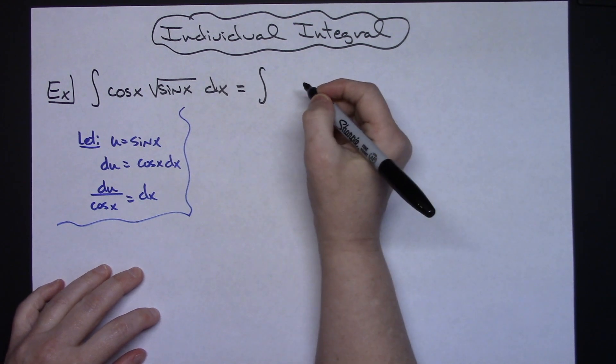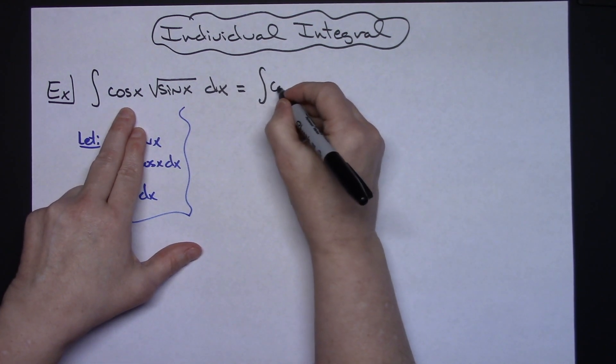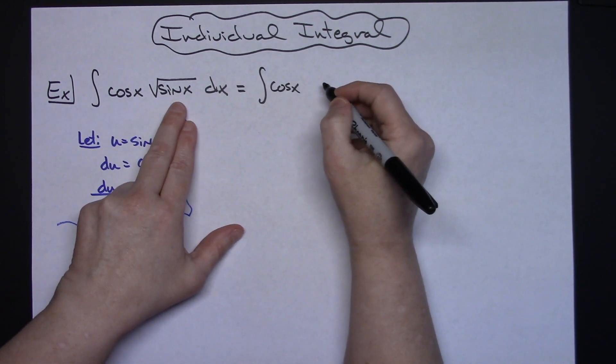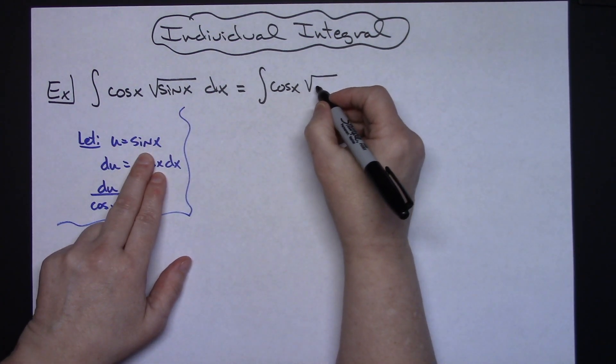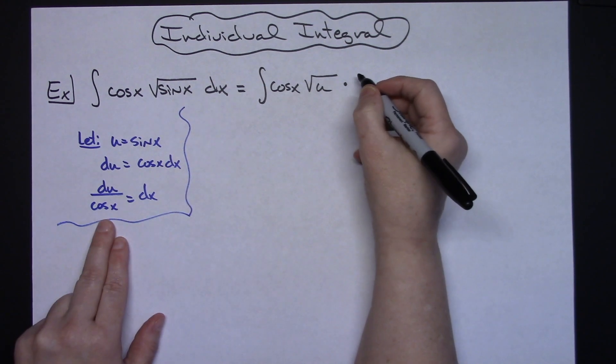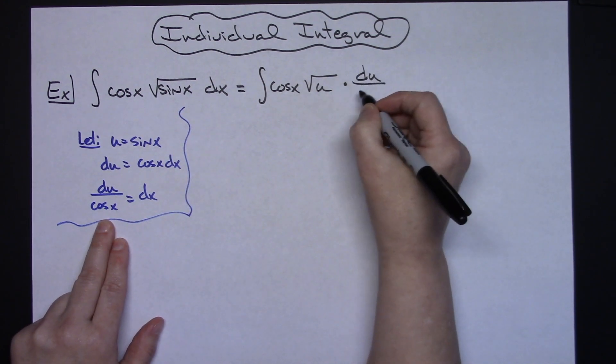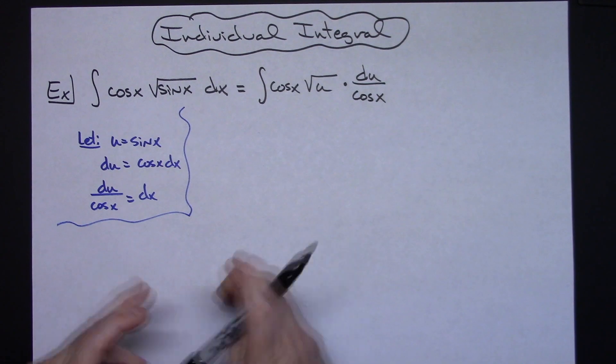So we will have the integral, our cosine x will still be there, then I will have square root of u because I'm going to replace sine x with u and then I'll replace the dx with the du over cosine x.